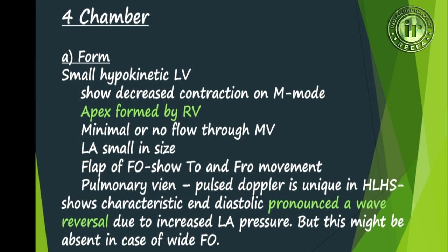On ultrasound in the four-chamber view, in the first form we see a small hypokinetic left ventricle with decreased contraction, better appreciated on M-mode. Typically the apex is formed by the right ventricle, which is a very important finding. There is minimal or no flow through the mitral valve. The LA is small and the foramen ovale flap shows to-and-fro movement between the left and right atrium. Pulmonary vein flow is directed into the left atrium but cannot pass through the mitral valve, so it goes either to the right atrium or reverses back into the pulmonary veins.